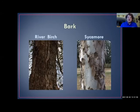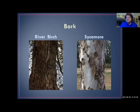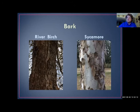Some other distinctive bark identifiers: river birch you can probably spot from quite a distance — very exfoliating bark with light and dark colors, very distinctive. Sycamore also has peeling bark revealing bright white smooth bark underneath, and in the sun in wintertime these really shine in the woods.